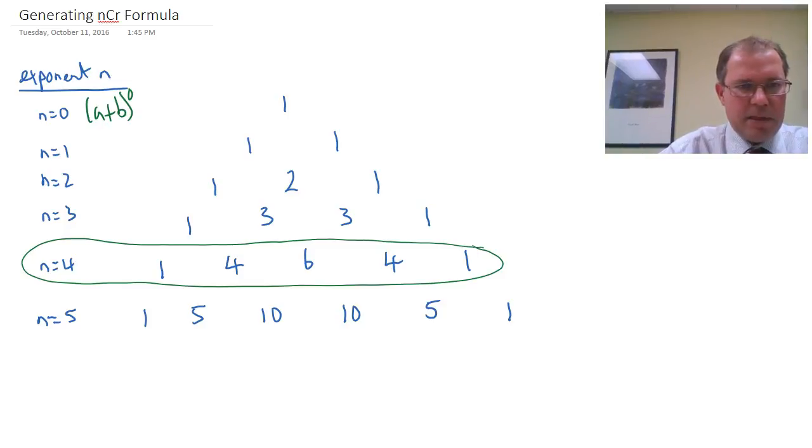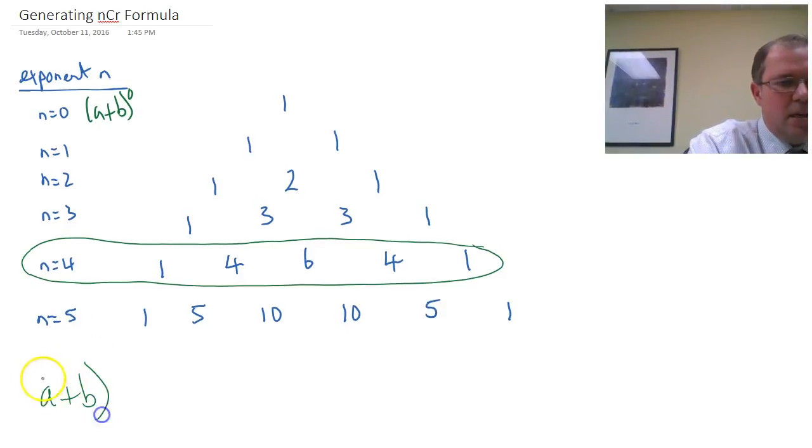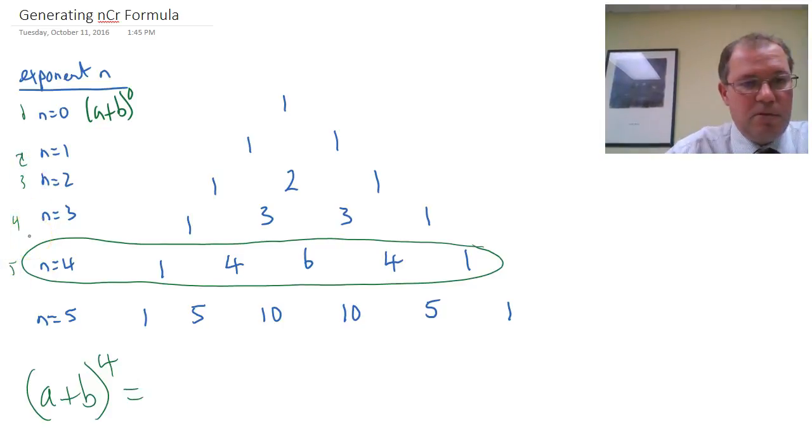So I'm going to start off with considering expanding a plus b to the power of 4. So I need the fifth line, because remember it starts at n equals 0, so the fifth line, 2, 3, 4, n equals 4 of Pascal's triangle.